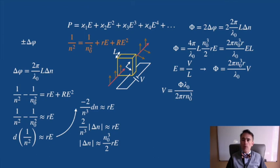For a π phase shift, which would be a half wave plate, the voltage is λ0 over 2r n0³.